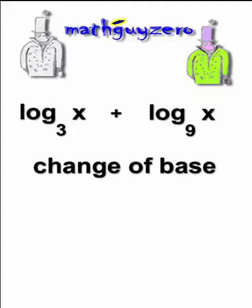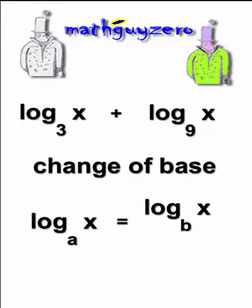This is the change of base rule, which basically states that if you have a logarithm with the base A of X, that's going to be exactly the same as the log base B. You can change the base to any base you want of X divided by the log base B.